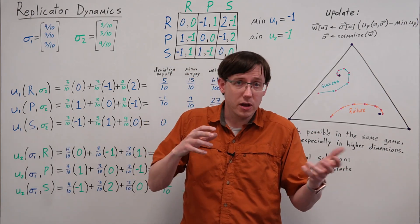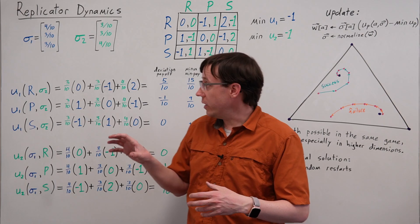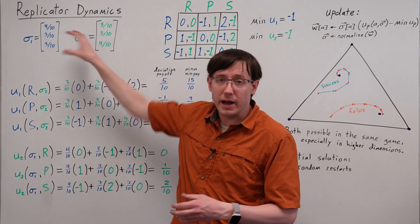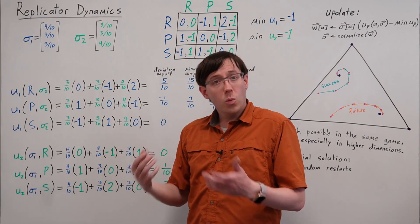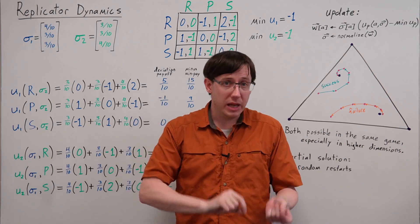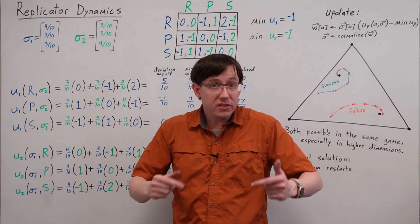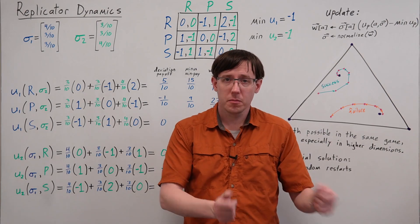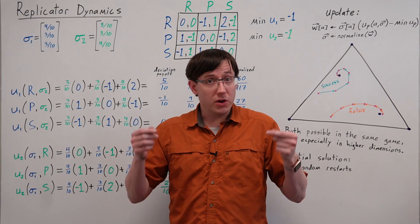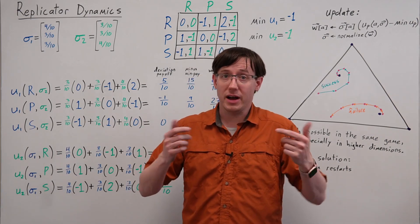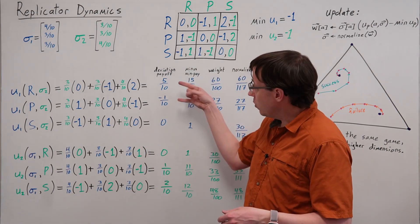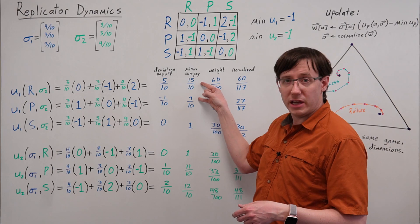To justify that, we should think about what would happen if we gave a Nash equilibrium as the input profile to this update. In a Nash equilibrium we know that every action being played with non-zero probability must be a best response. So if multiple actions have non-zero probability, for them to all be best responses, they must all have identical deviation payoffs. So for all actions being played, we'll get the same adjusted deviation payoffs.